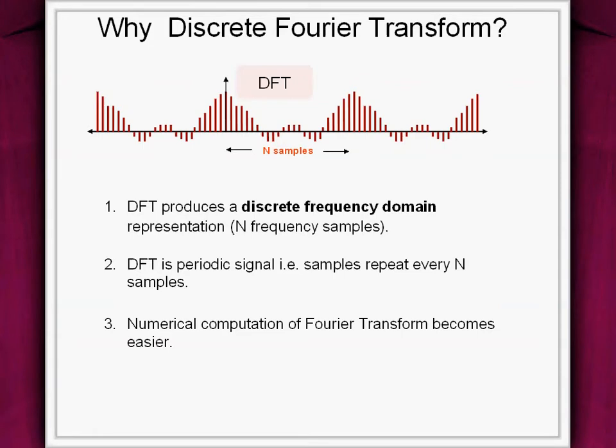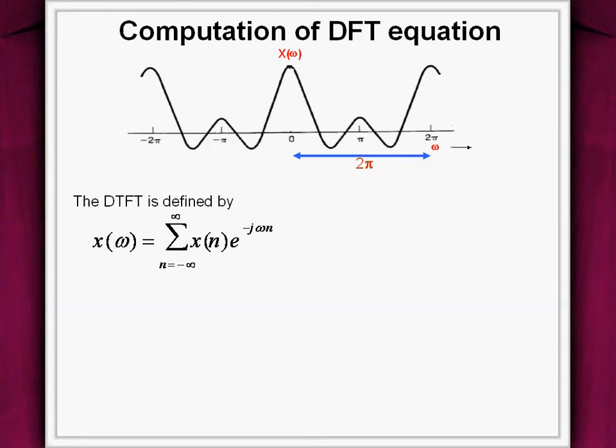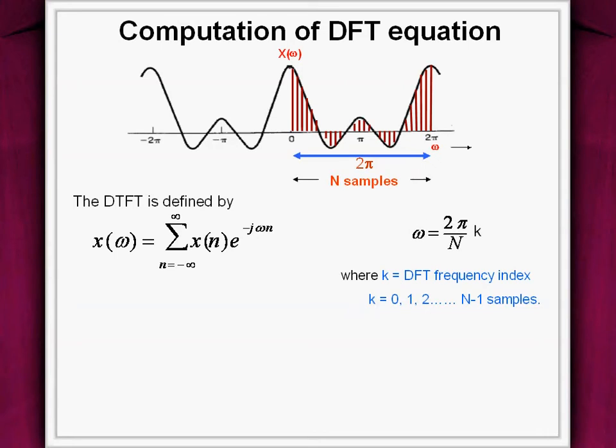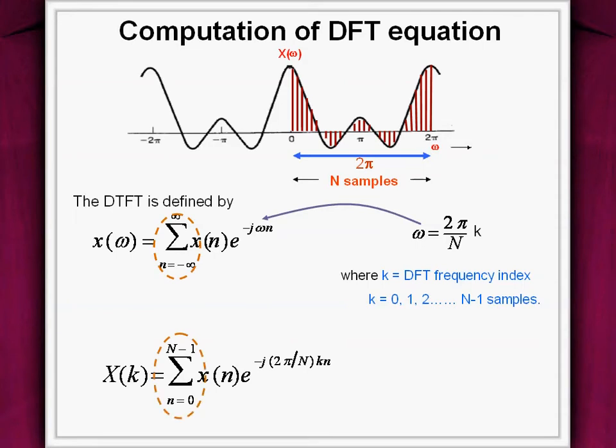The DTFT equation needs to get modified to get the DFT expression. We now know one period of DTFT, that is 2π, is sampled into N samples which gives us a relation for omega as 2π/N times k, where k is the DFT index. Substituting this discrete frequency into the DTFT relation, at the same time, the infinite sum in DTFT becomes finite from 0 to N-1 in the DFT equation. And finally, the DFT is denoted using the discrete base as x(k). This is the DFT relation.